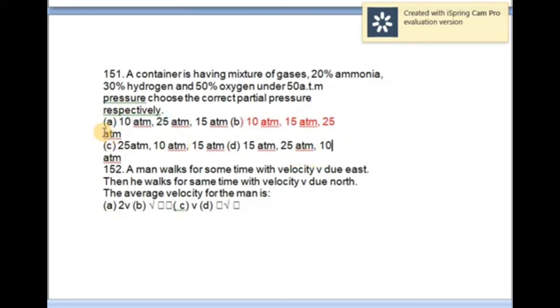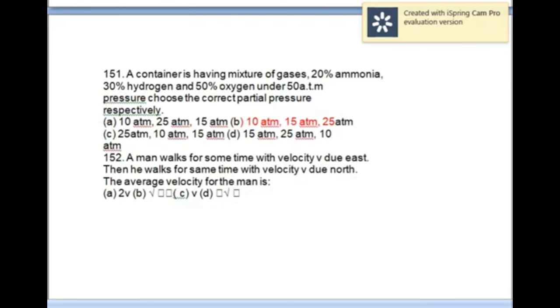The last one is: A man walks for some time with velocity V due east, then he walks for the same time with velocity V due north. The average velocity for the man is - the correct option is B, which is 1/2 V under square root.